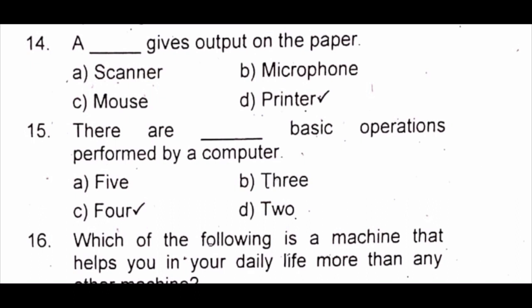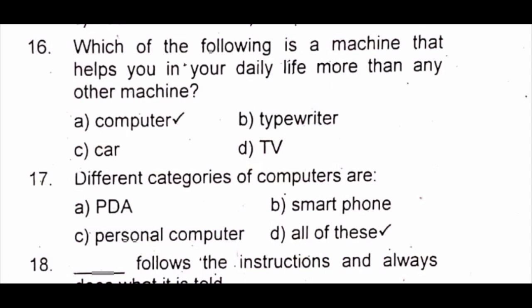Question 15: There are dash basic operations performed by a computer. A) 5 B) 2 C) 4 D) 2. The answer is C) 4. Question 16: Which of the following is a machine that helps you in your daily life more than any other machine? A) computer B) typewriter C) car D) TV. The answer is A) computer.